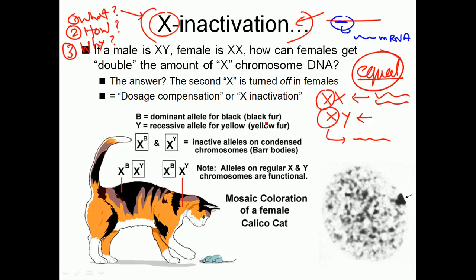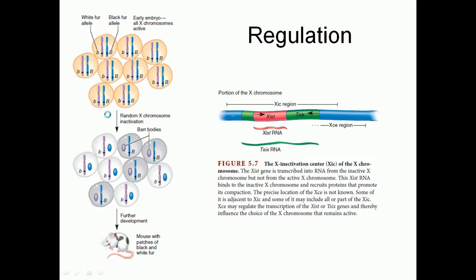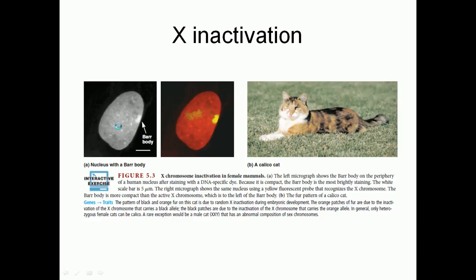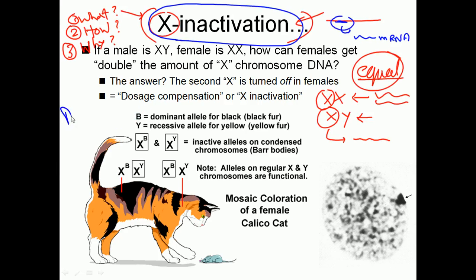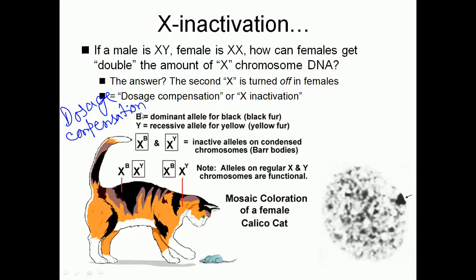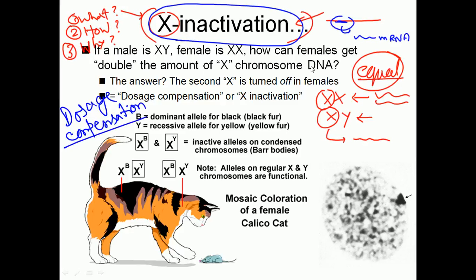To prevent these problems, X inactivation is performed. X inactivation is also called dosage compensation. The term 'dosage' refers to the dosage of all these single X chromosome genes, and it is compensated for the female, because females have a duplicated X chromosome.